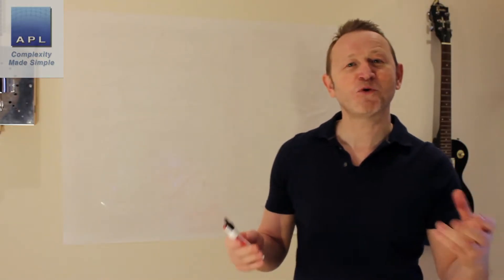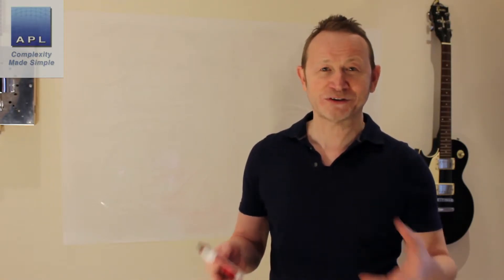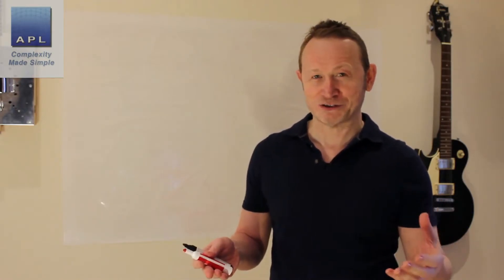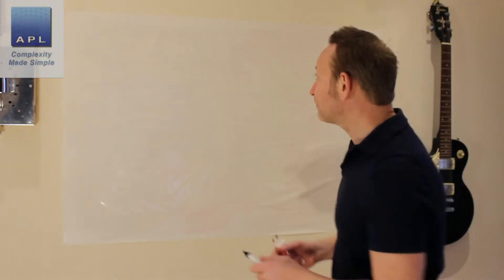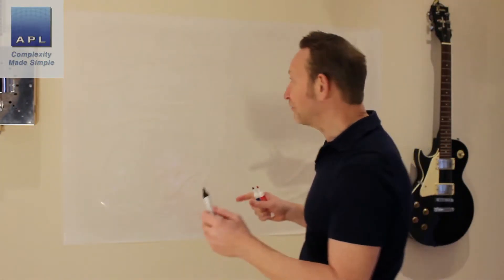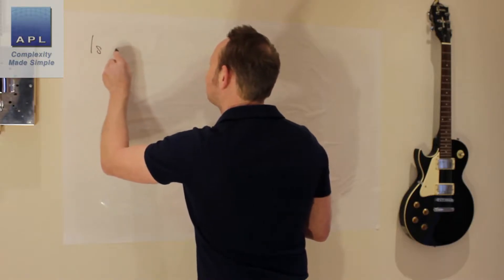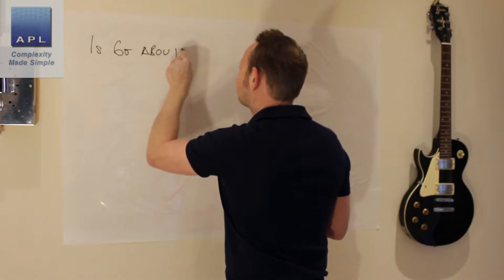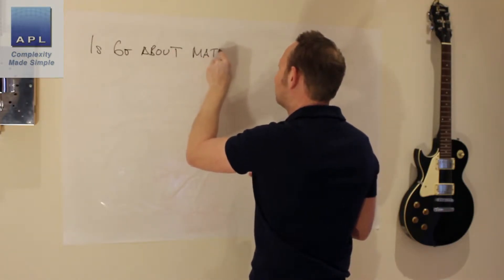Welcome to Complexity Made Simple. My name is Paul Allen and the subject of today's Six Sigma newsletter is, is Six Sigma all about mathematics? And if it's not, what does the DMAIC cycle look like when it's not about mathematics? So we're going to use the DMAIC cycle to explain this.